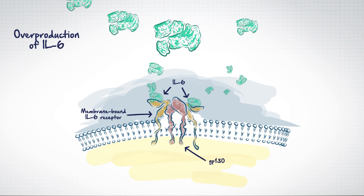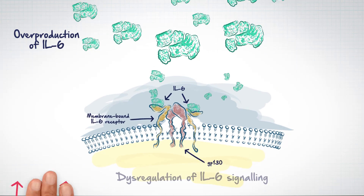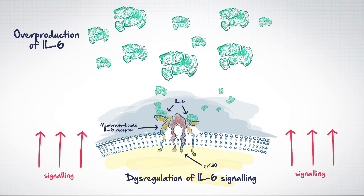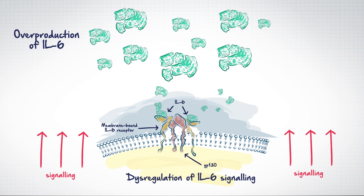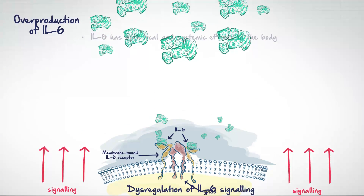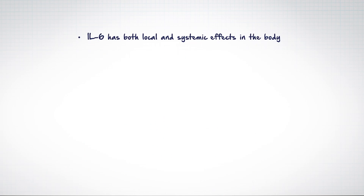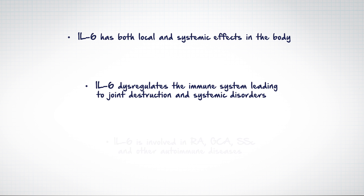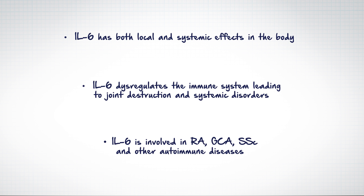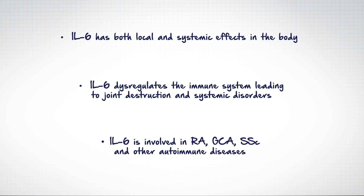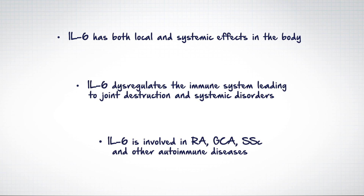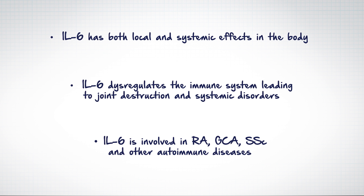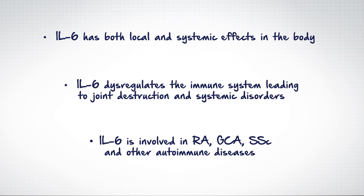The overproduction of IL-6 and dysregulation of IL-6 signaling have been demonstrated to have a range of local and systemic effects in the body. These lead to joint destruction and systemic disorders in patients with RA, as well as profoundly influencing the nature of a range of other autoimmune diseases.